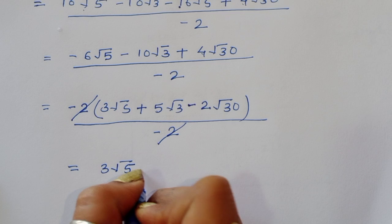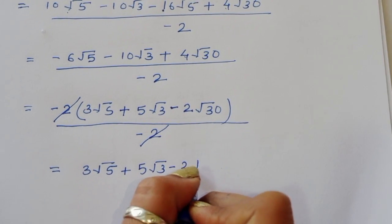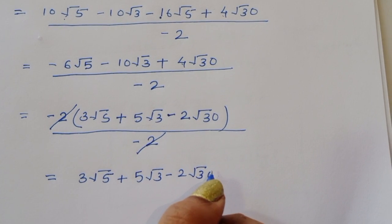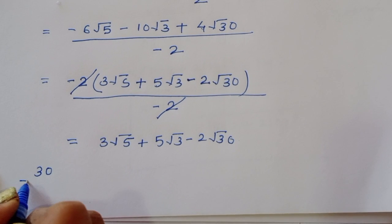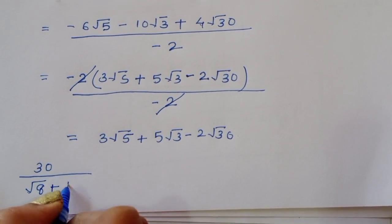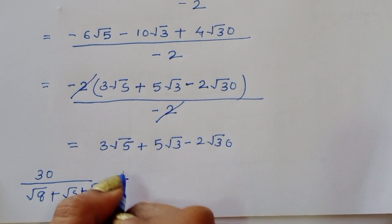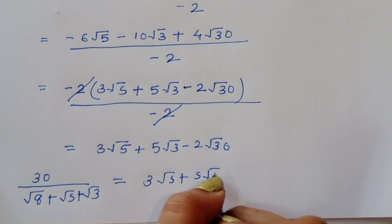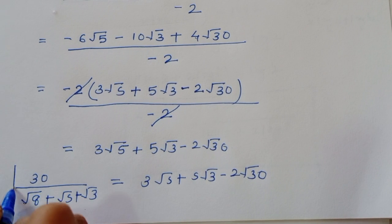The minus 2 in the numerator and denominator cancel. Therefore, 30 divided by (square root of 8 plus square root of 5 plus square root of 3) equals 3 square root of 5 plus 5 square root of 3 minus 2 square root of 30. This is the final solution.